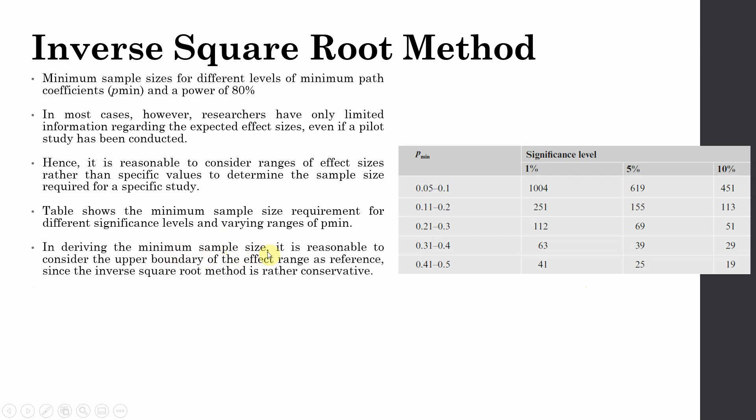In deriving the minimum sample size, it is reasonable to consider the upper boundary of the effect range as reference since the inverse square root method is rather conservative. You need to take the upper value of your effect range.